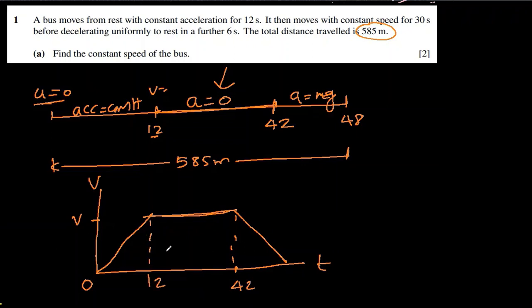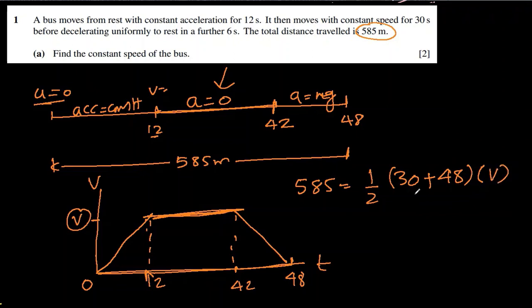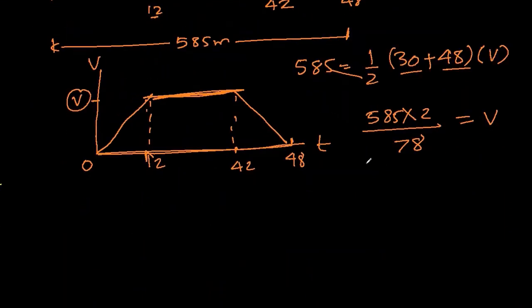Total distance will be the area under this curve. The area under this curve will be the area of the trapezium. So 585 equals one-half times the sum of parallel lines: 30 plus 48, multiplied by v. We can find it easily now. 585 times 2 divided by 78. When I use the calculator I get v equal to 15 meters per second.